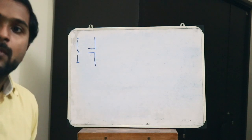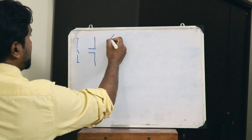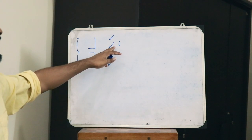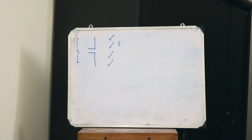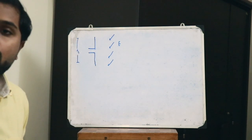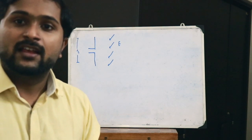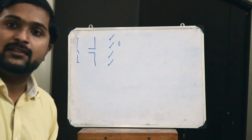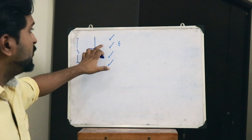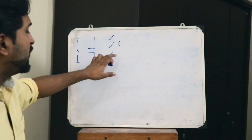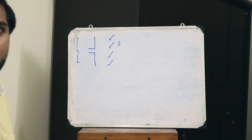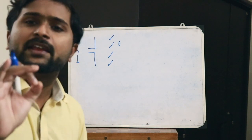Now let us assume we have a particular electric field incident on this dipole antenna. In the presence of this electric field, the effective height or effective length of this dipole antenna changes. This changed height is therefore referred to as the effective height of the antenna — that is, the height changes when it is subjected to a particular external electric field. Let the effective height be taken as HE.